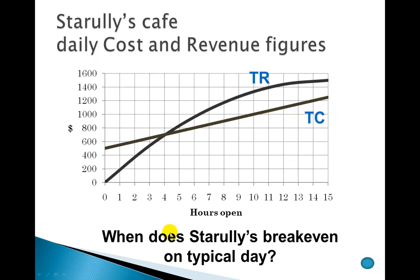One last example: when do we break even? Break even is when we start making a profit — for what time period do we start making a profit? That would be right here, the intersection of revenue and cost. When revenue equals cost, or when profit starts becoming positive, that's what we call break even. I'm estimating this somewhere just a little after four hours, so maybe 4.1. It takes me about four hours to break even so that I can actually start earning a profit.